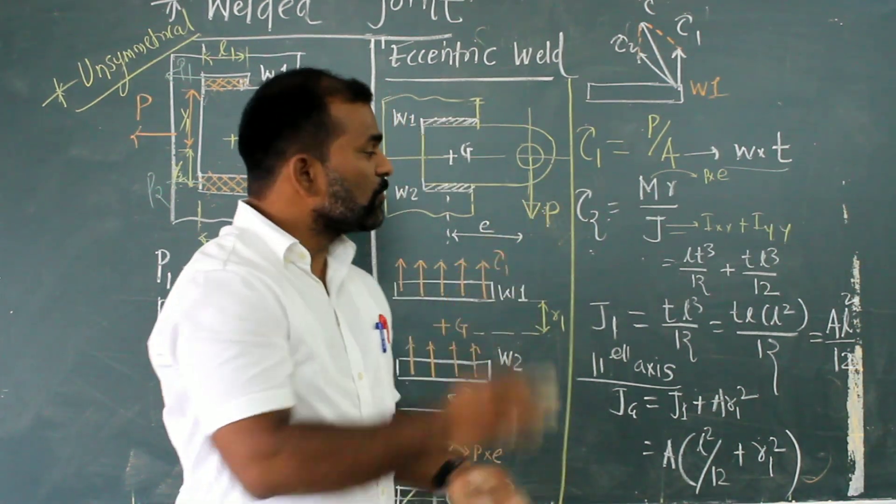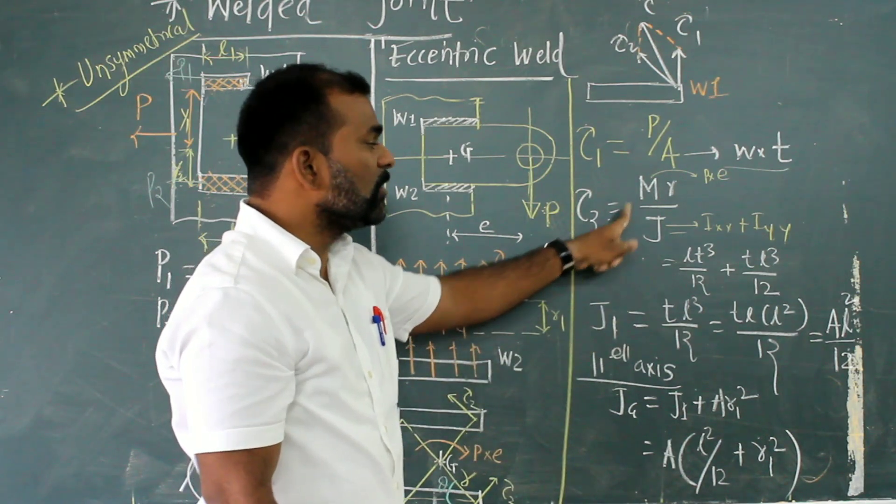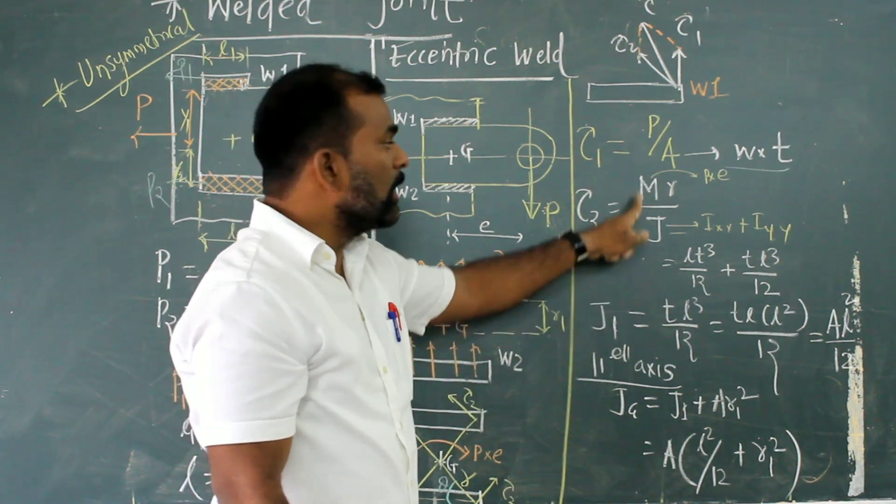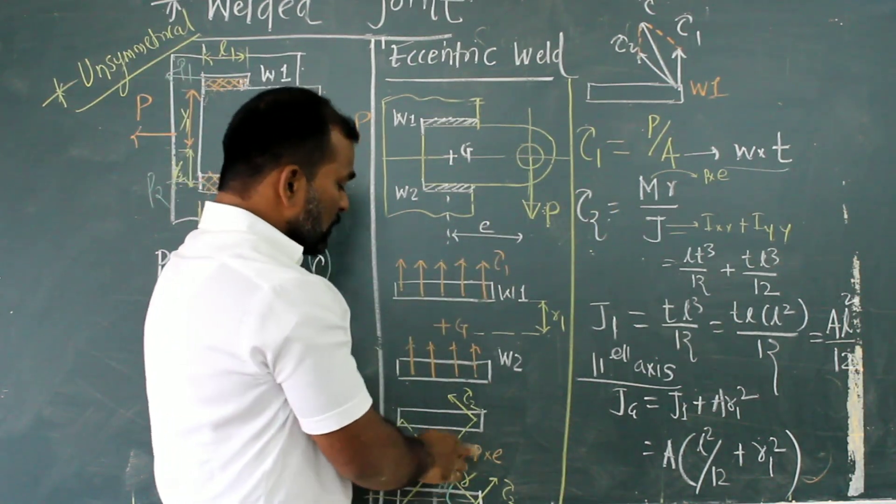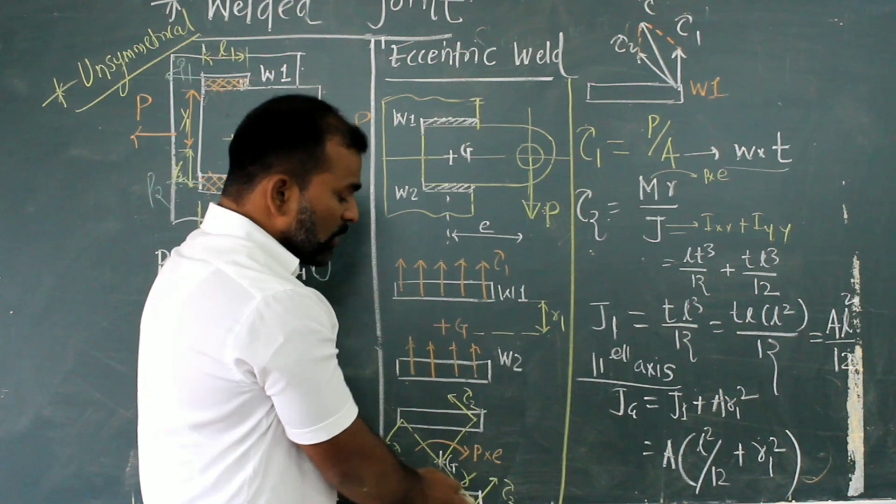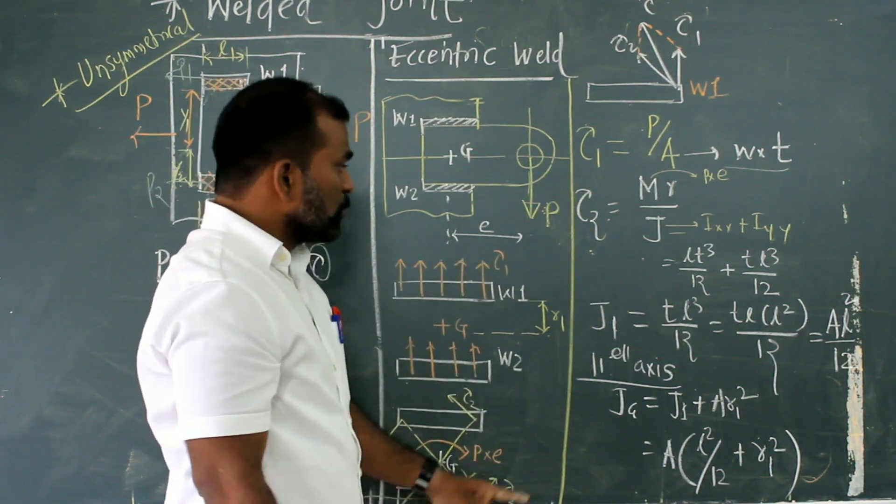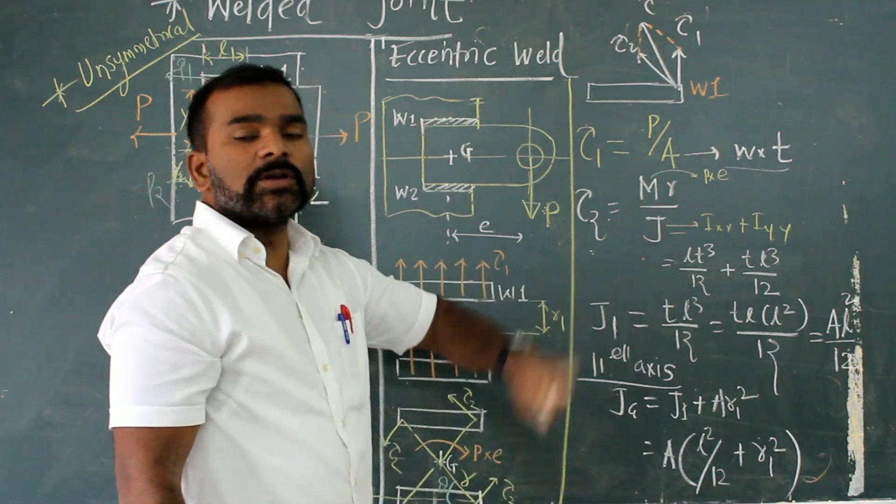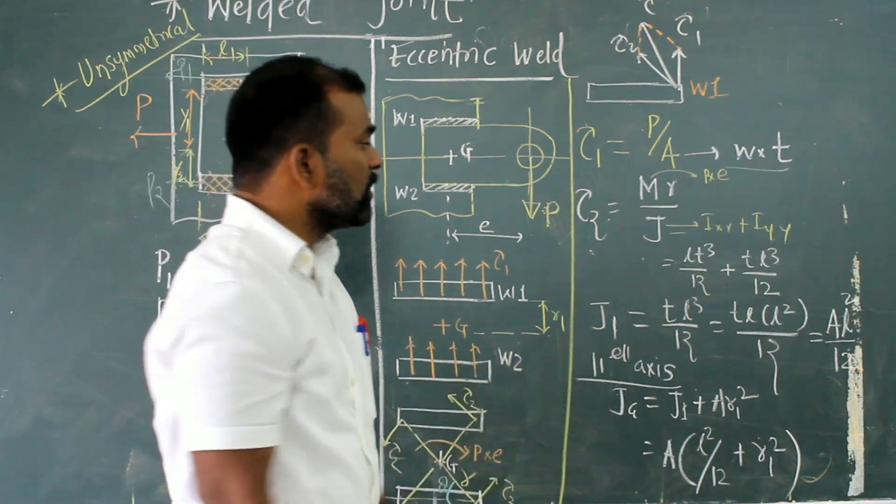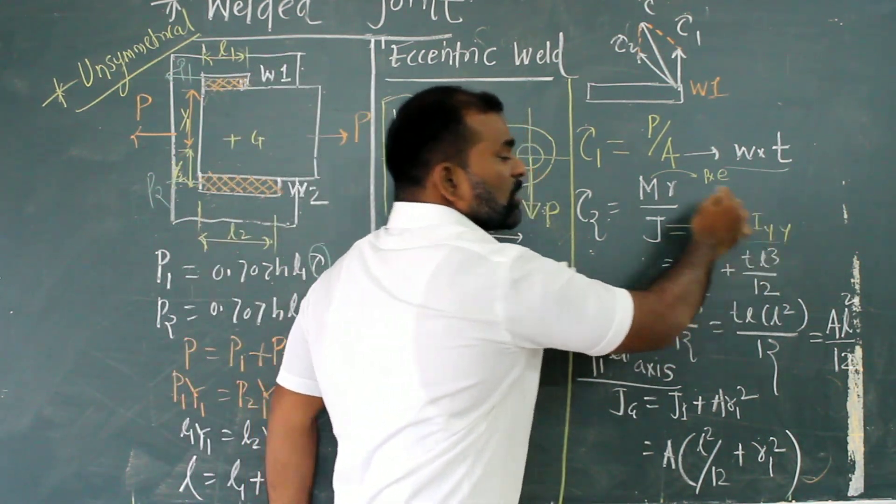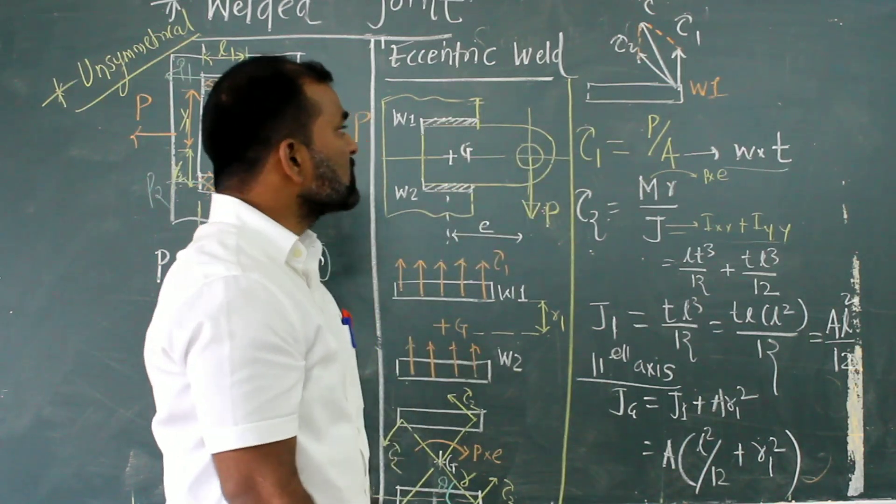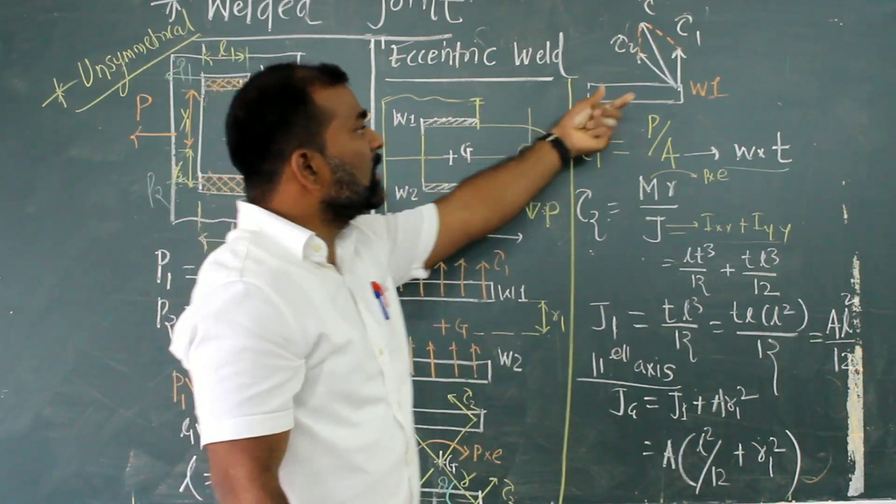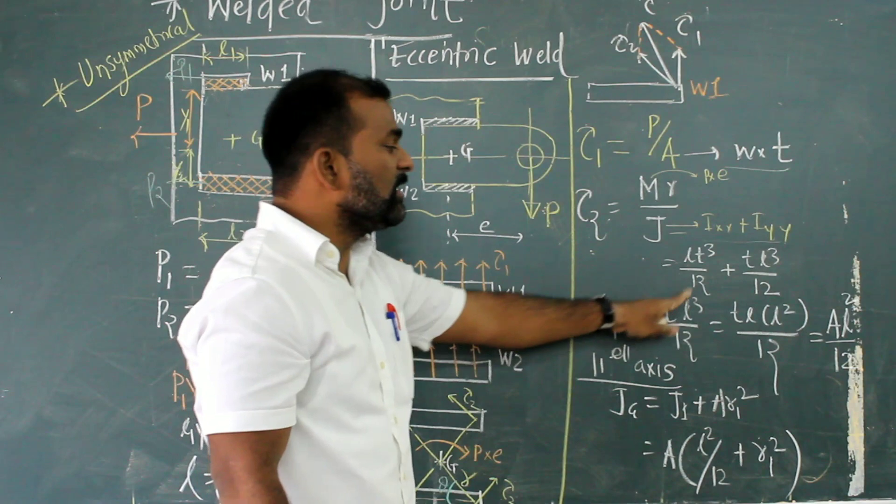First, look at the value of J. If I consider I axis, it will come as L is length, T is thickness, that is L T squared by 12.